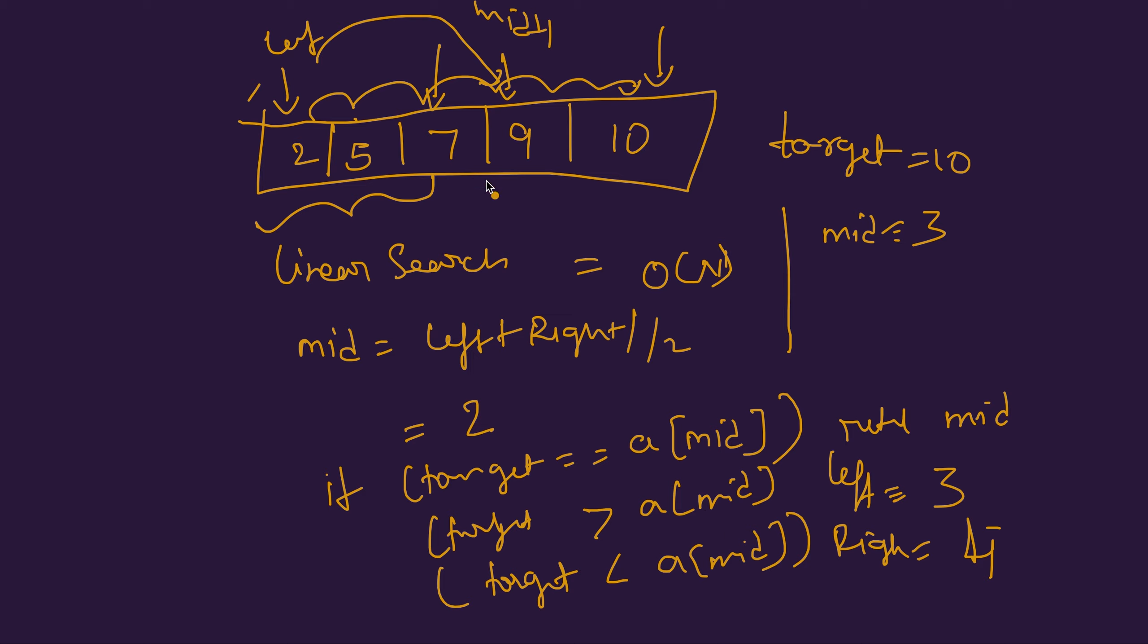10 is greater than 9, so again we change left to 4 and right still remains 4. In the third iteration, mid would become left plus right by 2, which is 4, iteration 3.